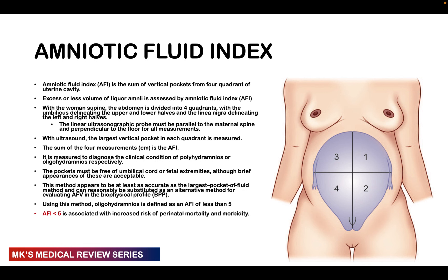If you add the scores from each quadrant together, what you get is the amniotic fluid index — the sum of the vertical pockets from all four quadrants of the uterine cavity. An amniotic fluid index of less than 5 is associated with increased perinatal mortality and morbidity. These parameters are used to make a diagnosis of either polyhydramnios or oligohydramnios.